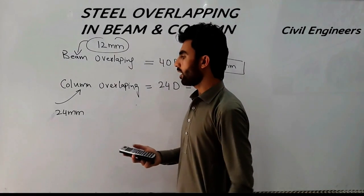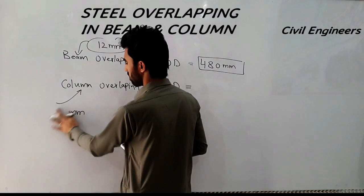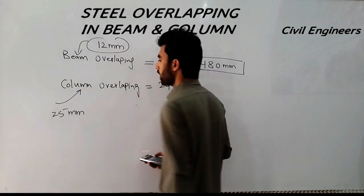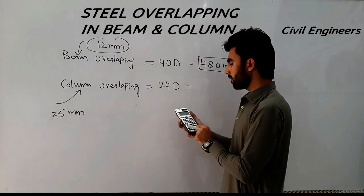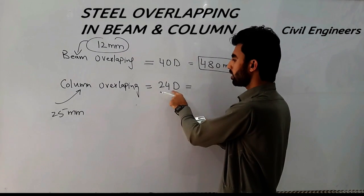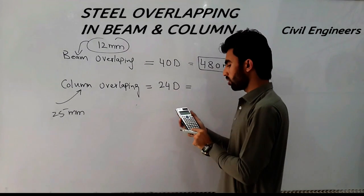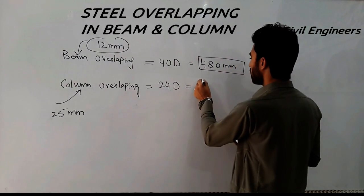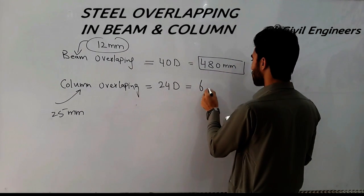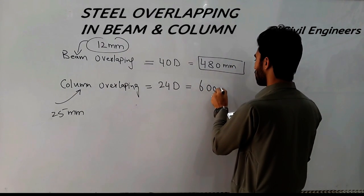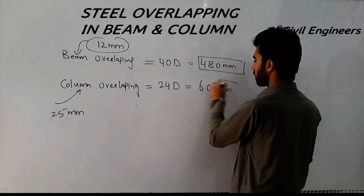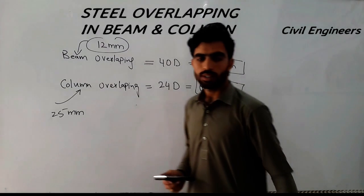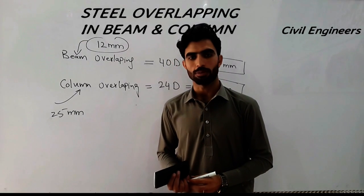For the column example, 24 is not a standard size so we take 25mm diameter. So 25mm × 24 = 600mm. The overlap length for a 25mm bar in a column will be 600 millimeters. It depends on the diameter of the bar.